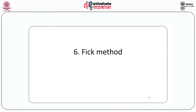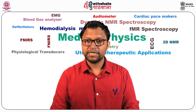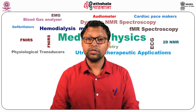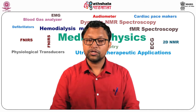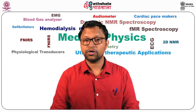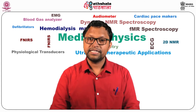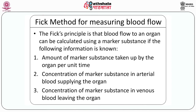The Fick method is one of the oldest methods of determining cardiac output. This can also be used to determine blood flow to any organ. The Fick principle is based on the amount of substance consumed or produced by the organ. It states that the total uptake or release of a substance by the organ is equal to the product of the blood flow to the organ. The blood flow to an organ can be calculated using a marker substance.